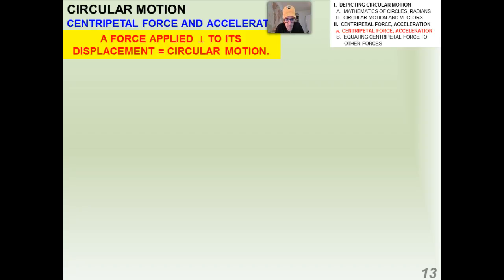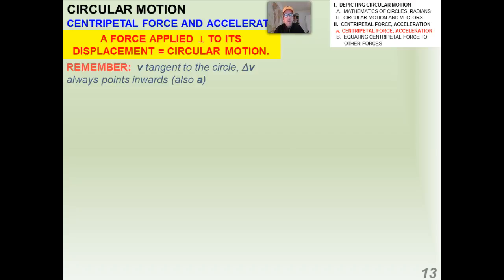I just want to remind you from our study of circular motion previously that a definition of circular motion is any time we have a force applied to an object which is perpendicular to its displacement — F as a vector is perpendicular to S as a vector. Also remember that the change in velocity vector for an object going around a circle always points towards the center, so there's an acceleration towards the center, and that acceleration is what causes an object to go in a circle.